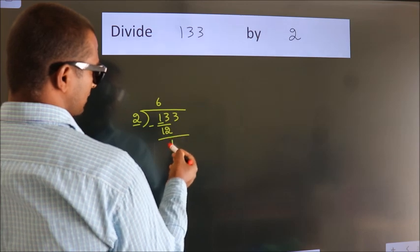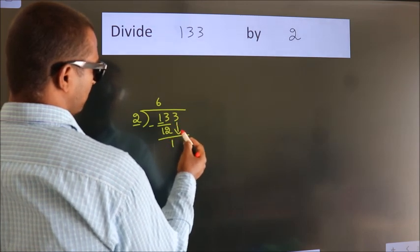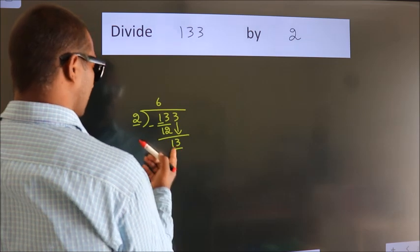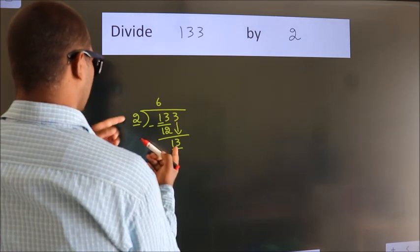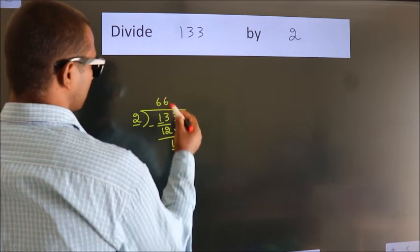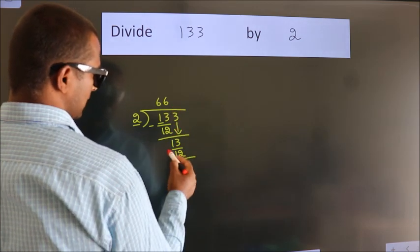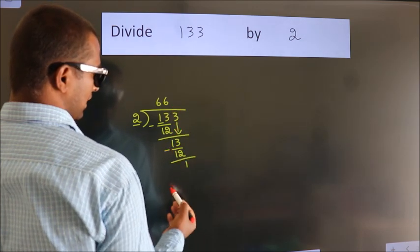After this, bring down the beside number. So, 3 down. So, 13. A number close to 13 in 2 table is 2, 6, 12. Now, we subtract. We get 1.